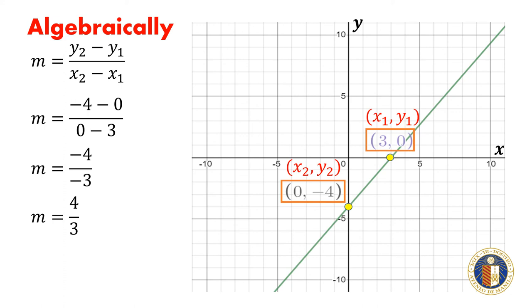Note that we were actually given the y-intercept which is negative 4. We have enough information to write the equation of the line in slope-intercept form. The equation of the line in slope-intercept form is y equals 4 thirds x minus 4.